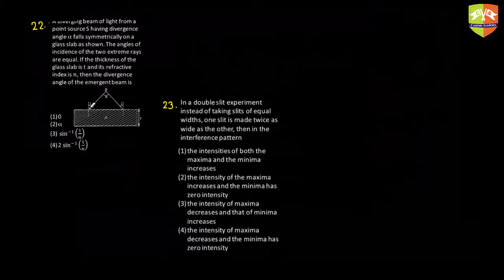See, when the ray will pass through a glass slab, the emergent ray will be parallel to the incident ray. So this ray has to be parallel to that. Similarly, here also, this ray which will come out will be parallel. This ray is parallel to that, and this ray will be parallel to this. And hence, the angle remains alpha only. That is why option two is correct.